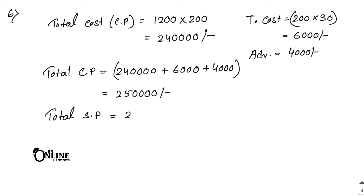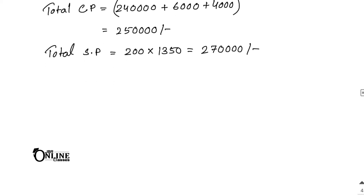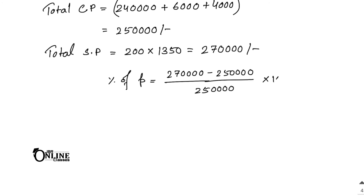He sells all bicycles at 1350 per piece, so total SP equals 200 into 1350, which equals 270,000. Since SP is greater than CP, there is profit. Percentage of profit equals (270,000 minus 250,000) divided by 250,000 into 100. After simplification: 20,000 divided by 250,000 into 100 equals 8%.